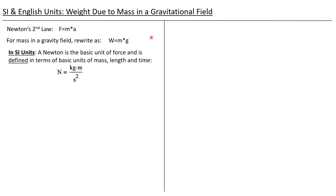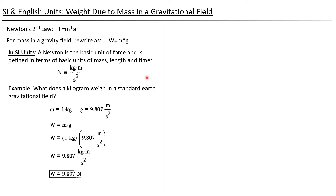In SI units the basic unit of force is known as a Newton, and a Newton is defined in terms of basic units of mass, length, and time. A Newton is defined to be one kilogram meter per second squared. As a simple problem: what does a kilogram weigh on the surface of the earth? With a mass of one kilogram and gravitational acceleration of 9.807 m/s², we get a weight of 9.807 kg·m/s² — and since a kg·m/s² is the definition of a Newton, the weight of one kilogram on the surface of the earth is 9.807 Newtons.